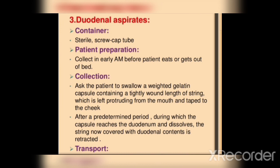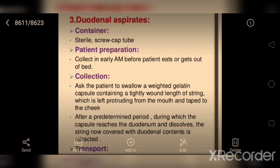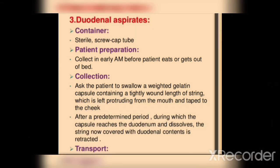For duodenal aspirates, collect in a sterile screw cap tube using an early morning sample. The capsule method uses a tightly lengthened string that protrudes. The capsule reaches the duodenum, dissolves, and the string becomes covered with duodenal contents.